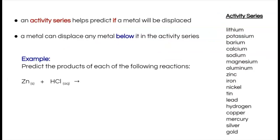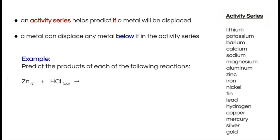Before we try examples, I need to explain the activity series. The activity series is a hierarchy of elements — it describes which elements are more powerful than others. For instance, lithium is at the top because it is the most powerful element in terms of its ability to bump out another element. It gives us an order of dominance.